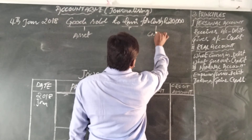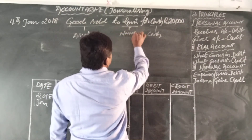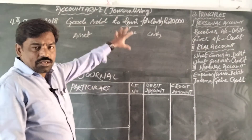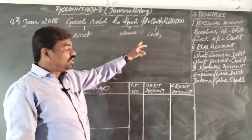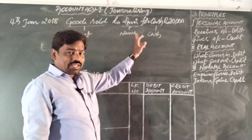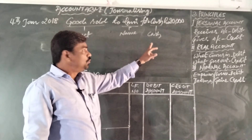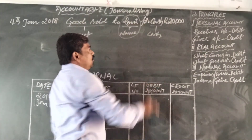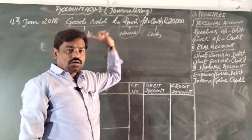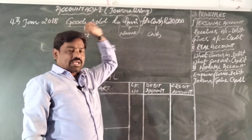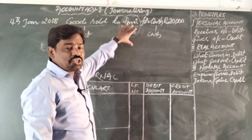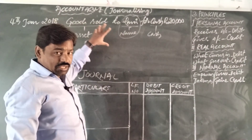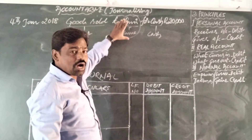So we have found three aspects: goods, cash, and Rani (a person's name). When you find three aspects in a transaction and cash and a name are both present, you give importance to cash and ignore the name of the person. This transaction is called a cash transaction. In a cash transaction with three aspects, we ignore the name of the person.